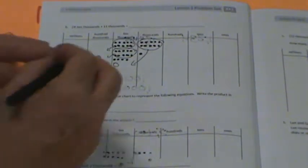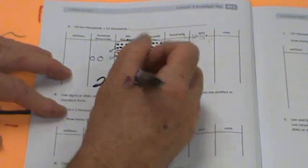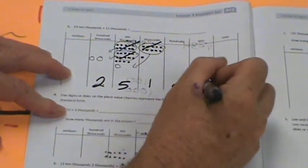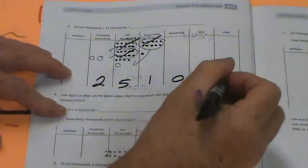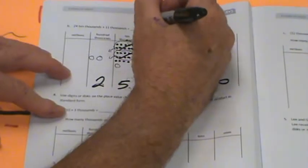Lo and behold, we have two hundred thousands, five ten thousands, only one thousand left and zero, zero, zero. Where do we put the comma? One, two, three, so it's two hundred fifty-one thousand. Hot diggity dog!